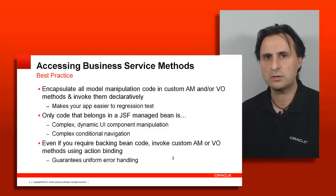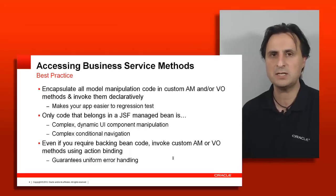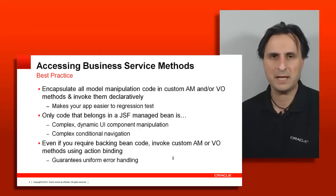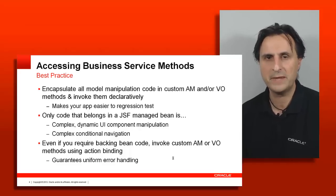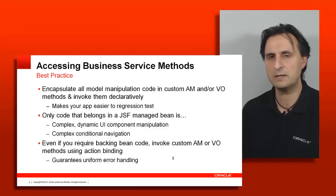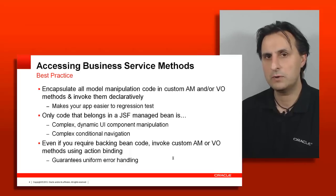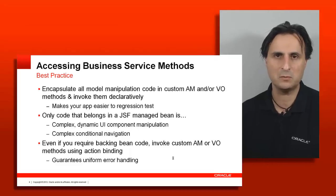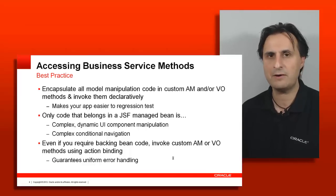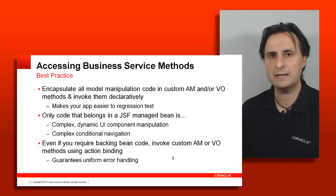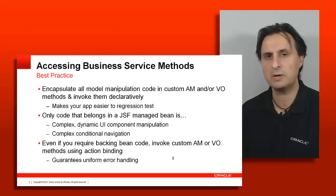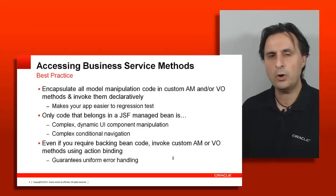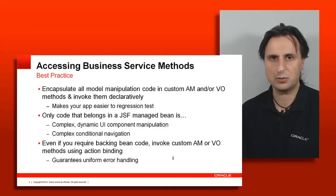There are many ways to work around the binding layer. For instance, if you know there is a method exposed on the application module, you could call BindingContext.findDataControl().getApplicationModule() and cast it to your application module. The difference is that most likely the framework will be smart enough to detect changes on the business side and refresh the user interface. However, chances are that will fail, in which case you will have a miss-synchronization between what happens on the business service and the binding layer. In addition, all of the error handling will not go through the binding layer but straight to your managed bean.